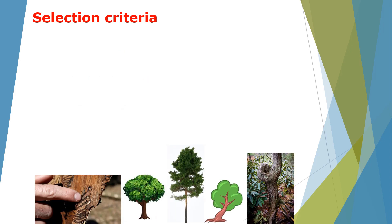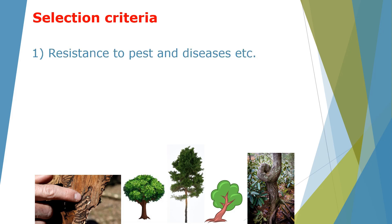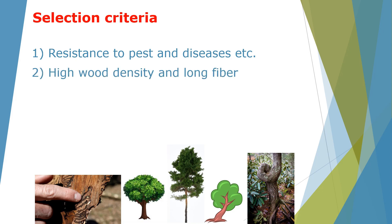Some of the selection criteria used for tree selection include resistance to pests and diseases — an important feature when selecting trees for plantation or tree improvement programs. You also want trees that have higher wood density and longer fiber, which describes the quality of the wood.